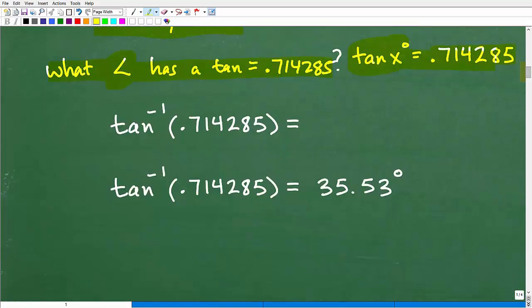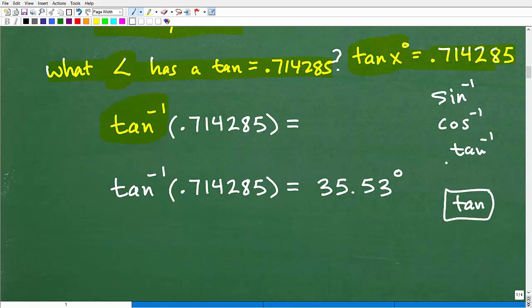This is where you need to use the arc tangent. It looks like this: it's a little tangent with a negative one. Each one of these trigonometric functions has this, so you can have the arc sine, you can have arc cosine like that, and then you can have arc tangent. The way you get to this on your calculator is you'll have a tangent button, but you also have a second function on your calculator.